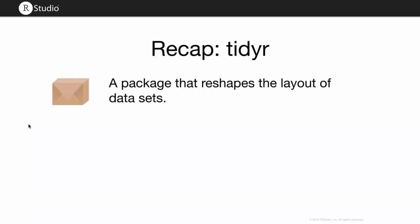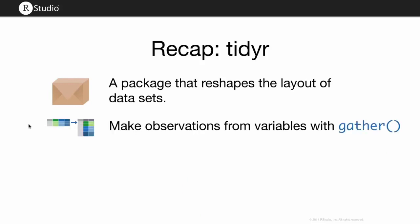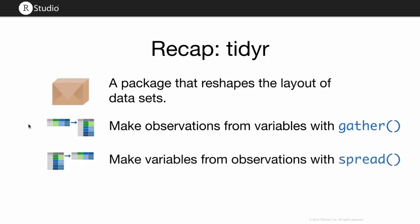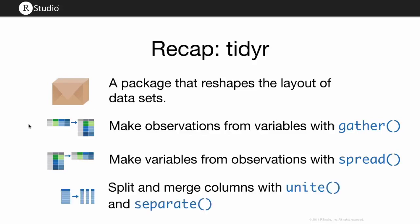To recap the tidyR package: it primarily works with the layout of your data and reshapes it. You can use gather and spread to change shapes back and forth — they're complementary. You can use separate and unite to split up and join columns — also complementary. This package is designed to get data into tidy format, which is the most efficient way to work with it in R.